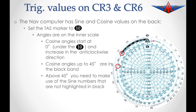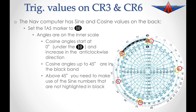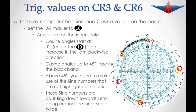The sine values go from 30 back to 20, back to 10, back to 6, back to 4, 3, 2, 1 and eventually back to 0. These sine numbers are counting downwards towards 0, going around the inner scale twice.